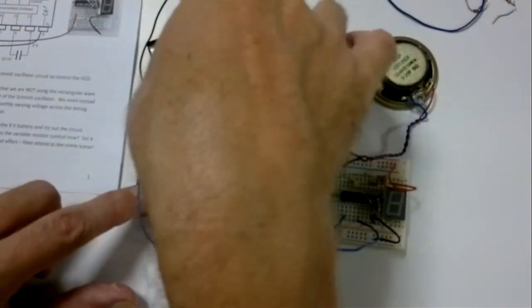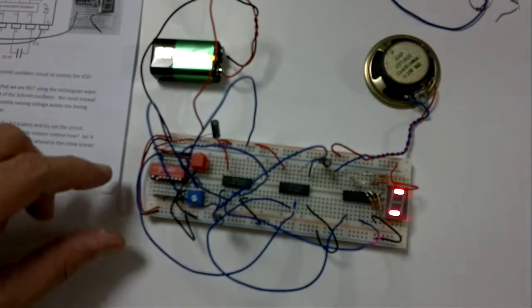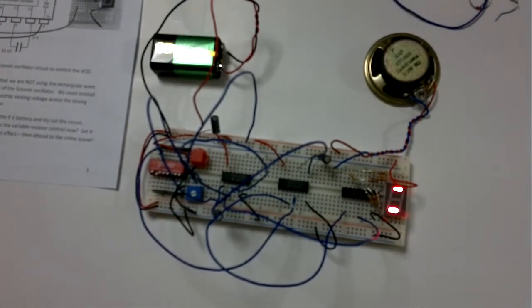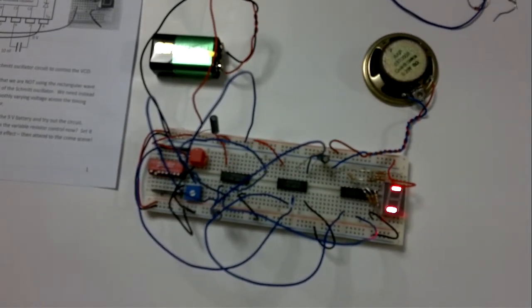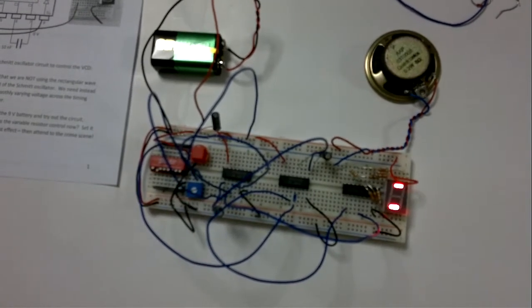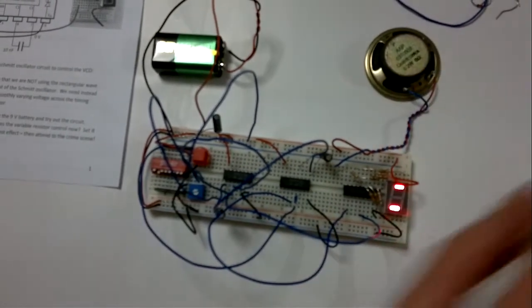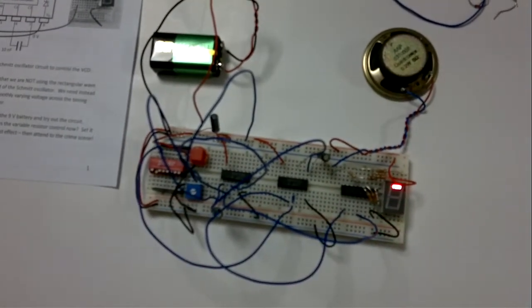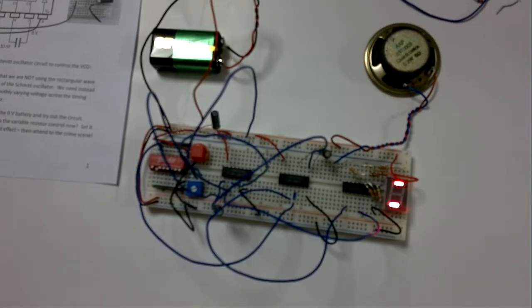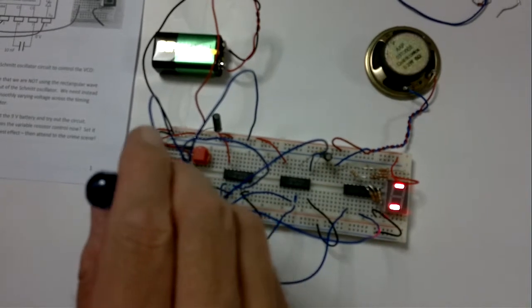So let's see what happens. We now turn on. It takes a while to warm up first. And it's quite slow. There you are. That's a dramatic police siren. So you can actually make it a bit faster if you like by reducing the resistance.